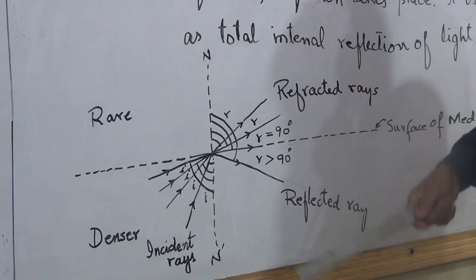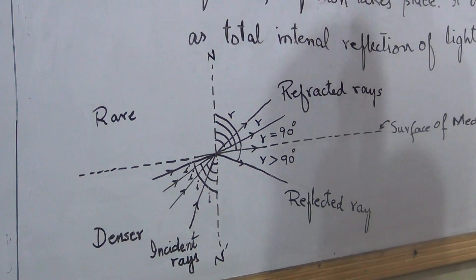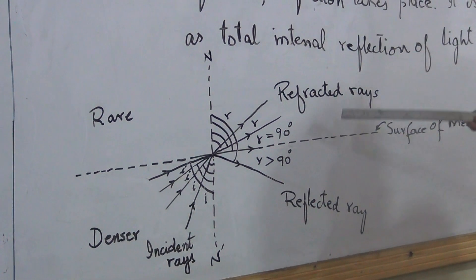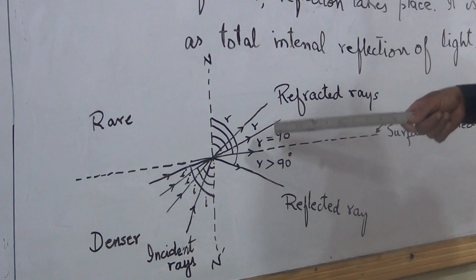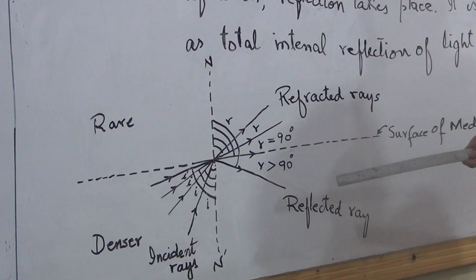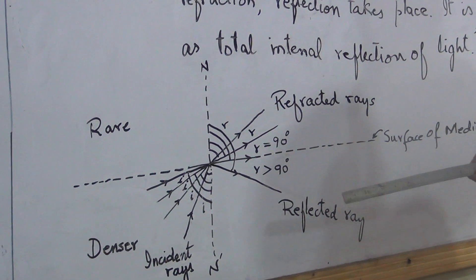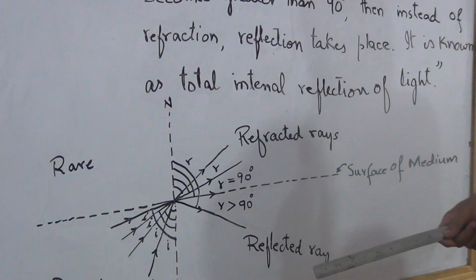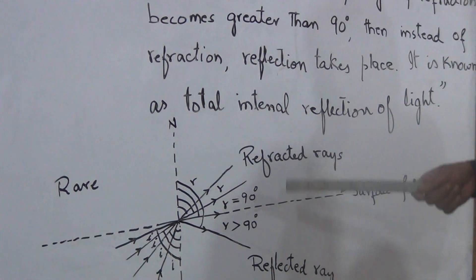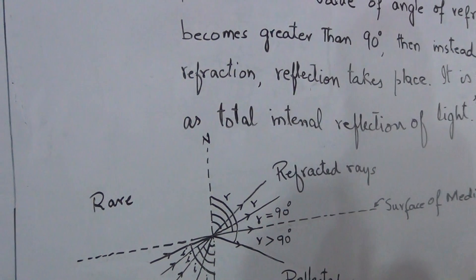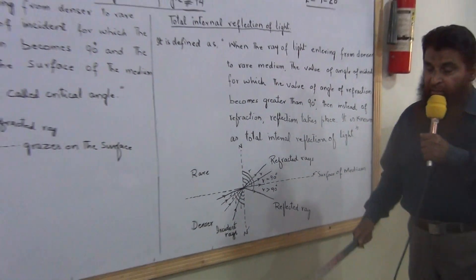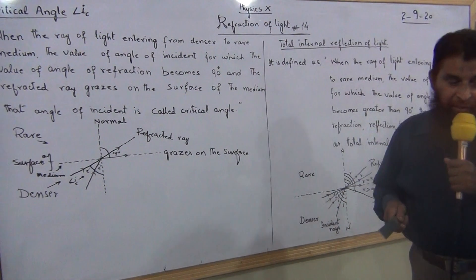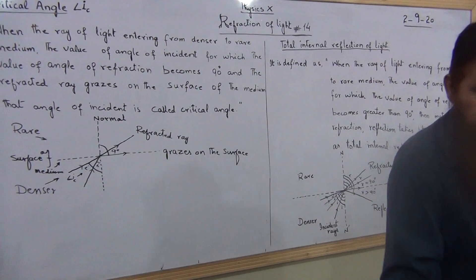This reflection of light is used to save the losses of energy. In the next topic, we will study about the application of total internal reflection. Thank you.